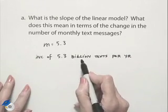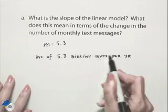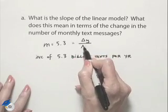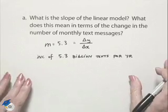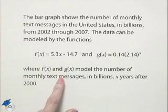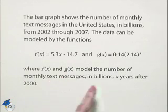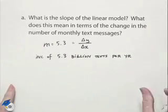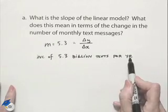Remember, this is a change in y over a change in x. Our y value was giving us the number of monthly text messages, and our x value gave us years. So our units are billion texts per year.